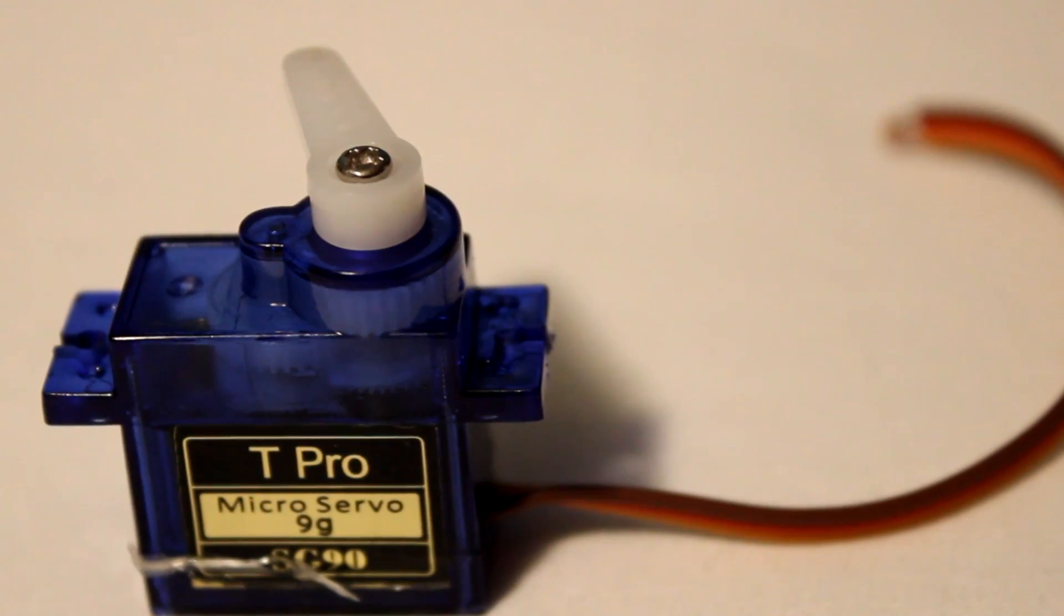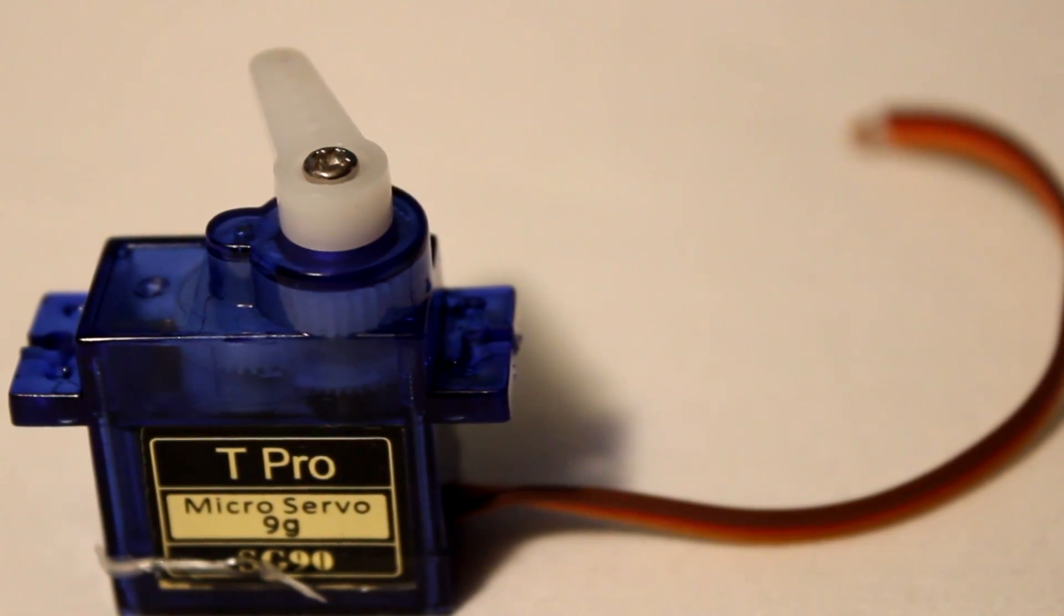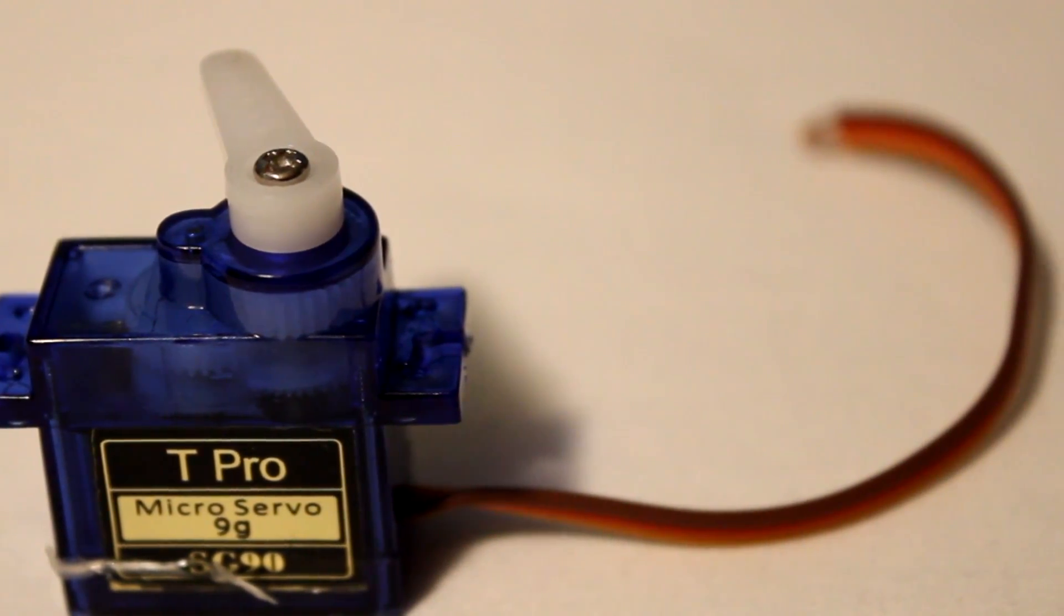It involves taking the potentiometer from a broken servo and adding it to a good servo to make it able to rotate continuously, which is what I'll be showing you today.